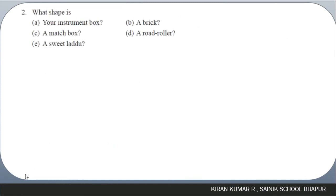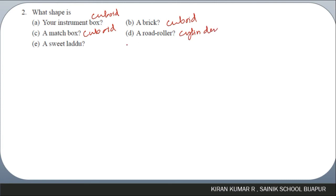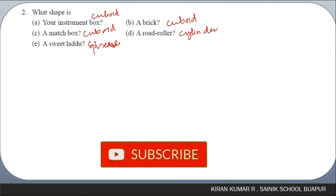Question two: what is the shape of your instrument box? An instrument box is cuboidal in shape. A matchbox is also cuboidal. A brick is cuboidal. A road roller is cylindrical in shape. A sweet laddu is spherical in shape. With that, we have completed the chapter.